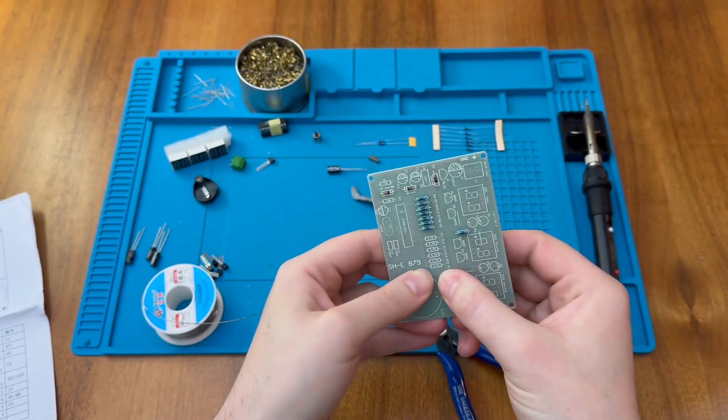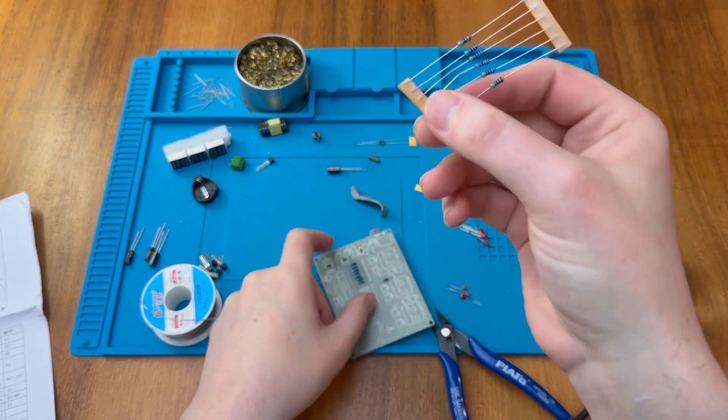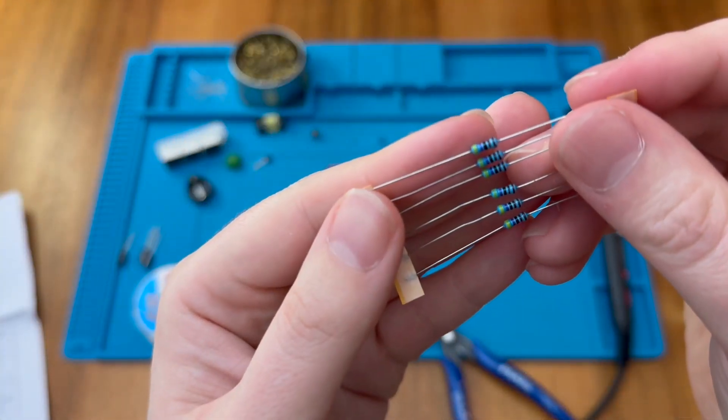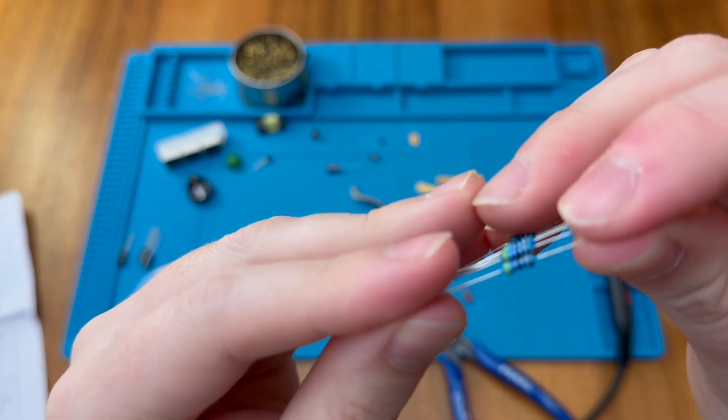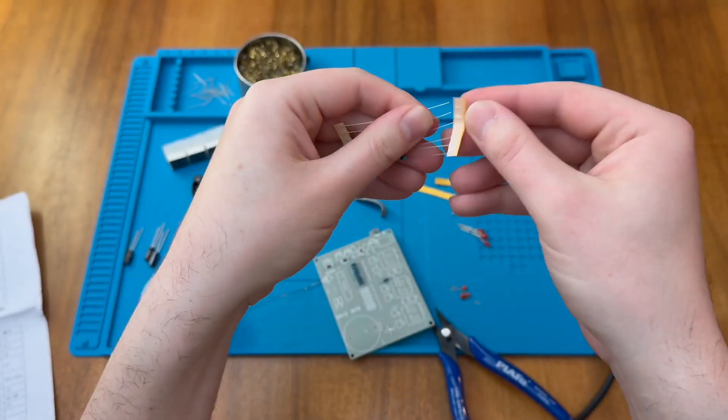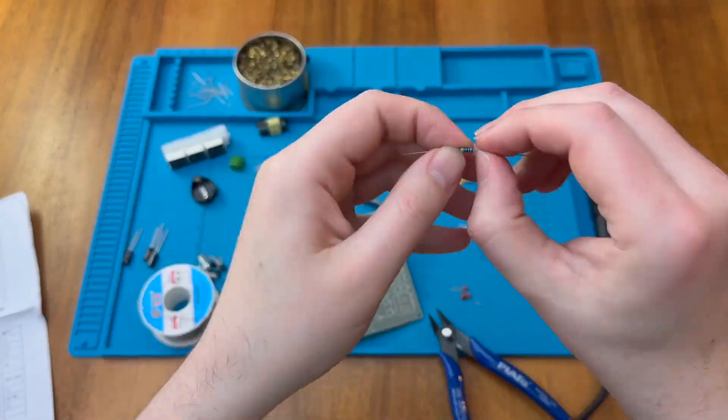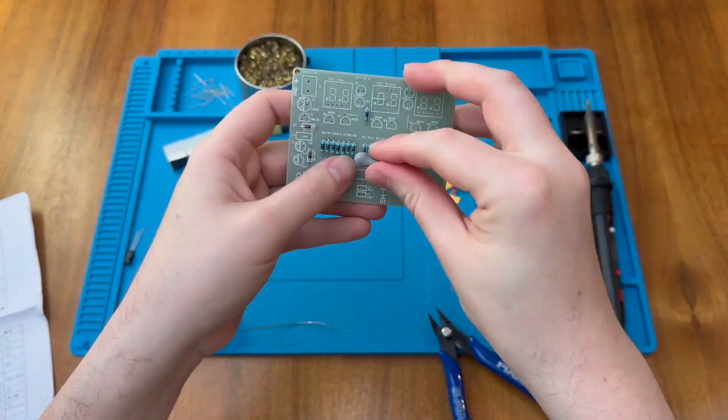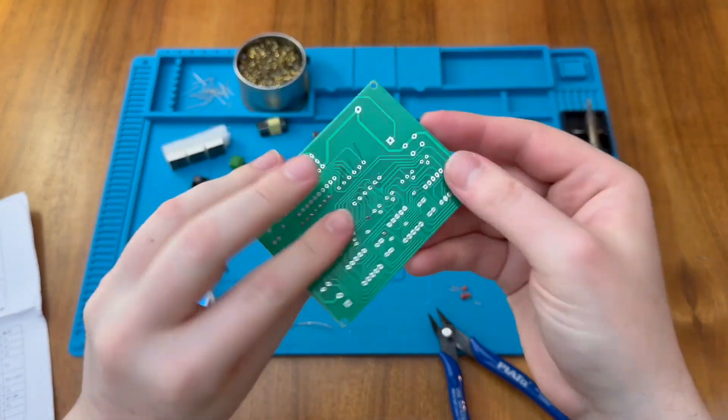Then we have some 4.7K resistors, and we have six of these. So these will be yellow, purple, black, and brown, which will give us 4.7. Again, we'll just apply the blue tack to hold these in place.